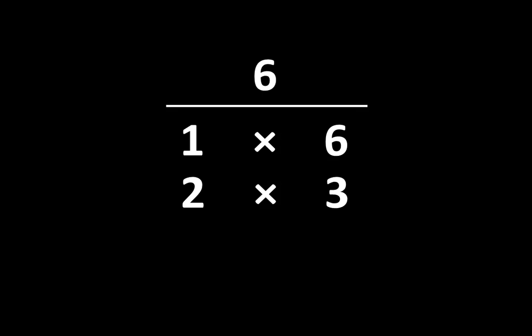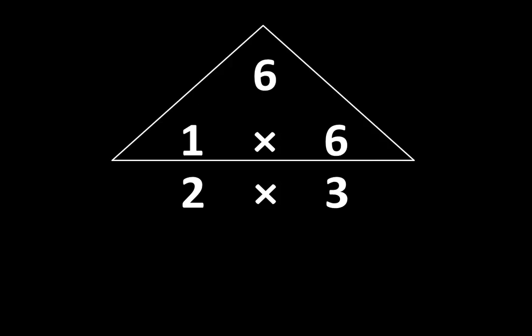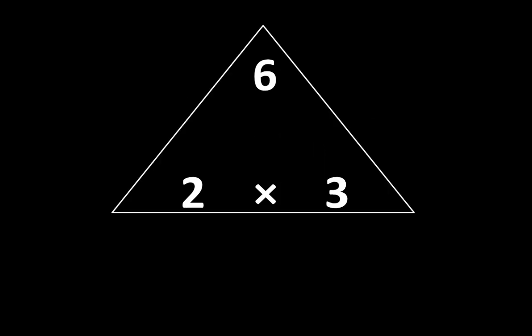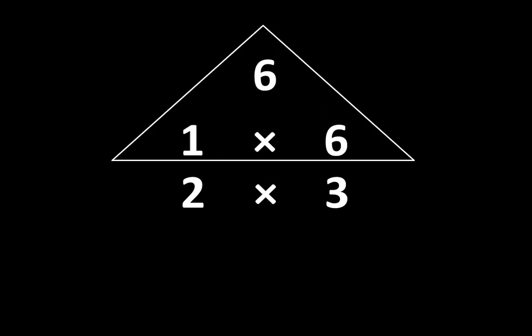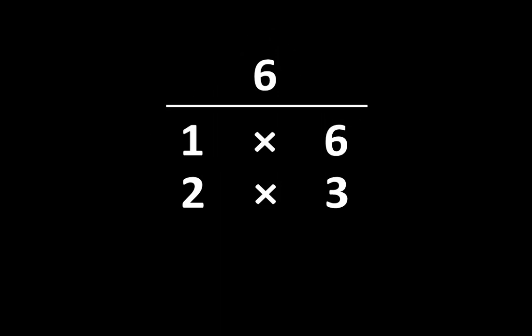Here are the factors of six. We can think of six as one group of six, and at the same time we can also think of it as two groups of three, because it's equal to both two groups of three and one group of six. That's what we see when we look at the list of factors.